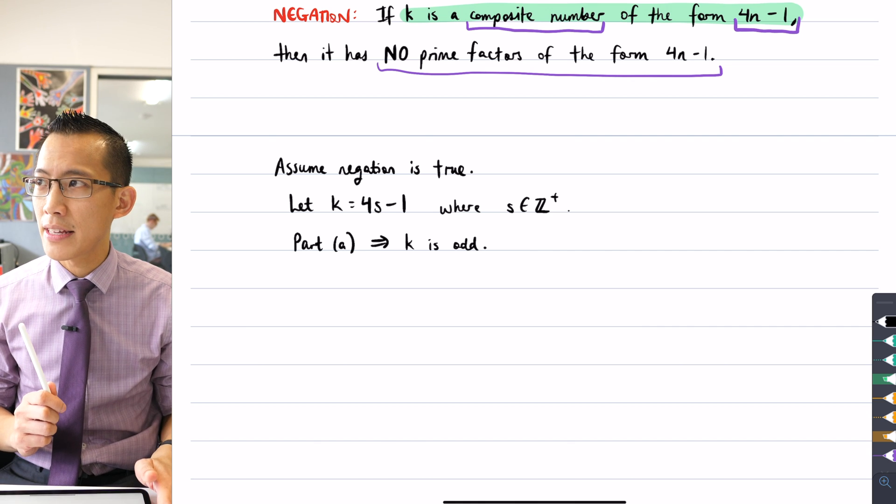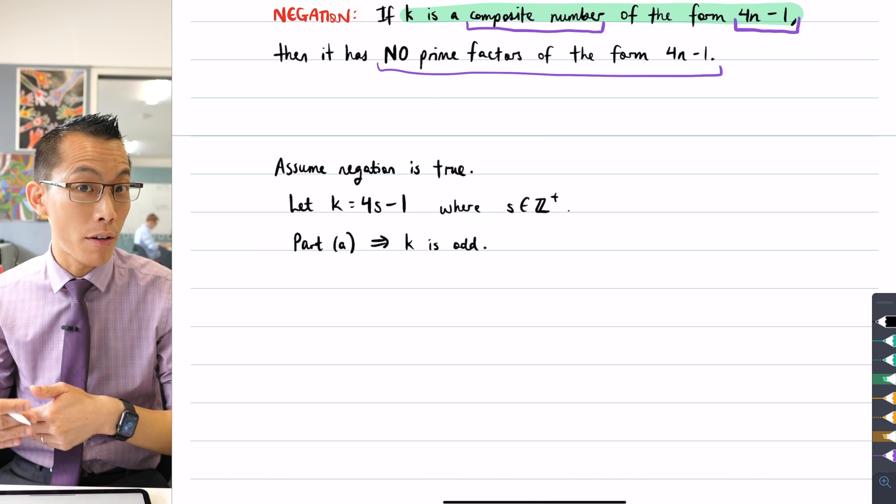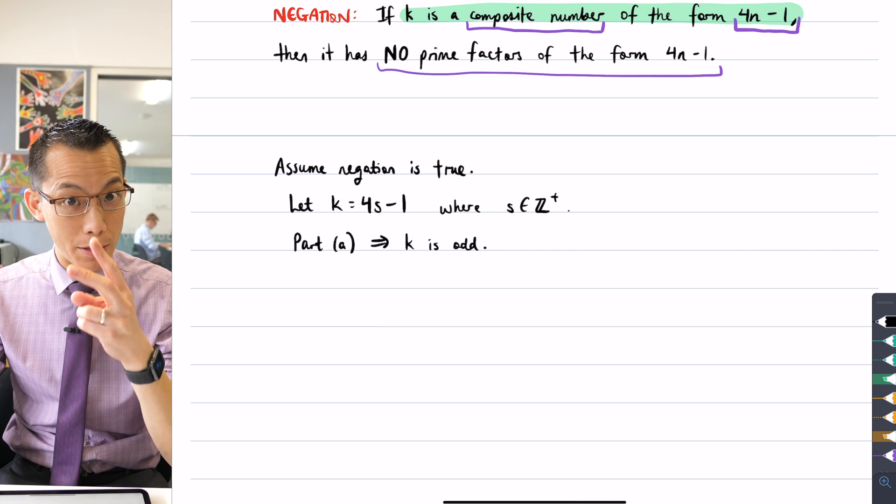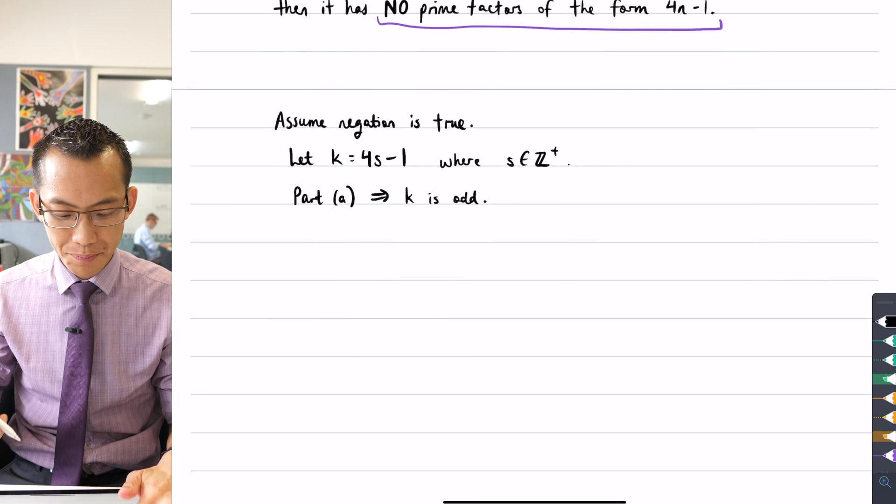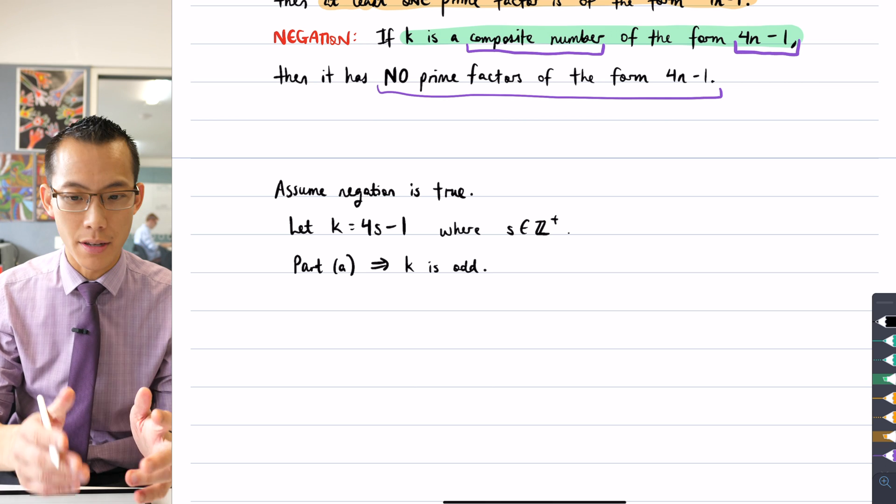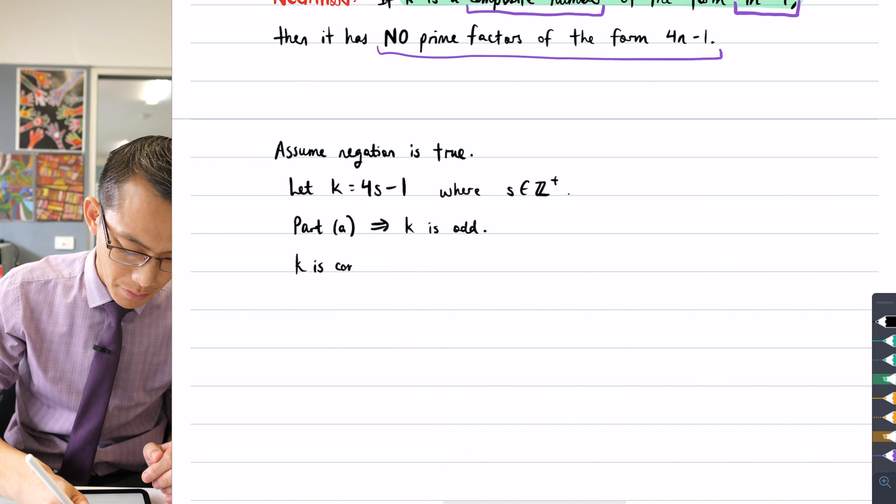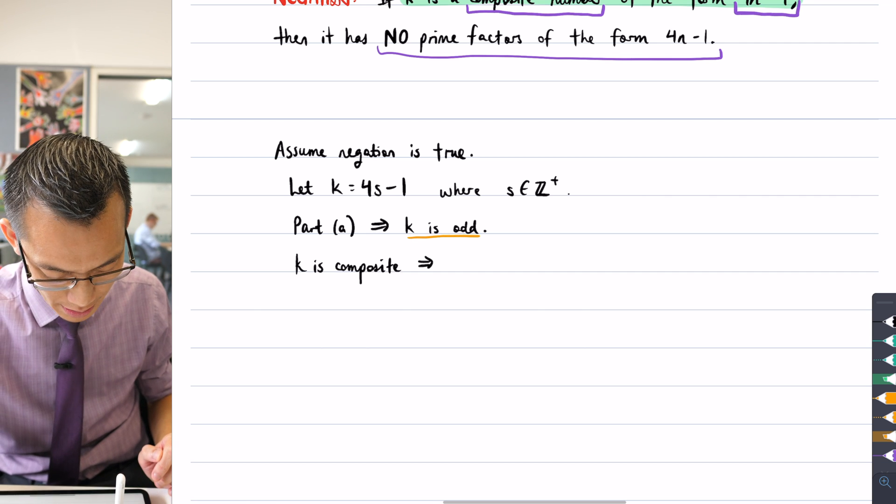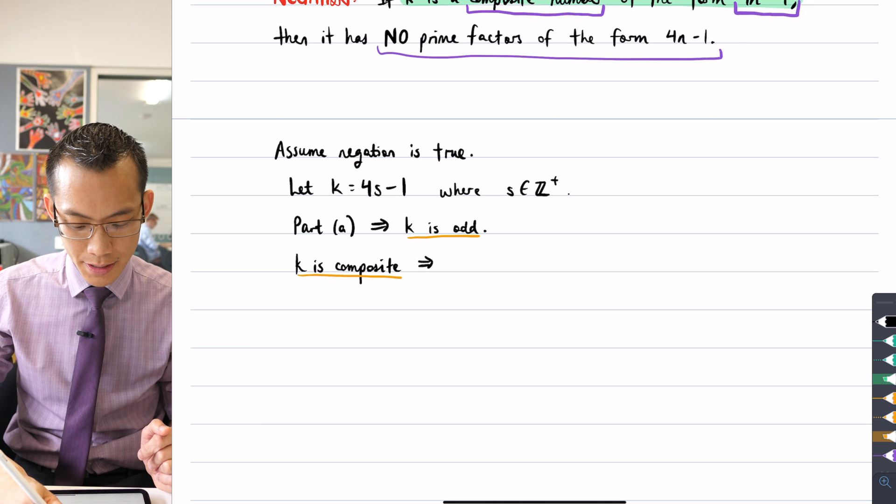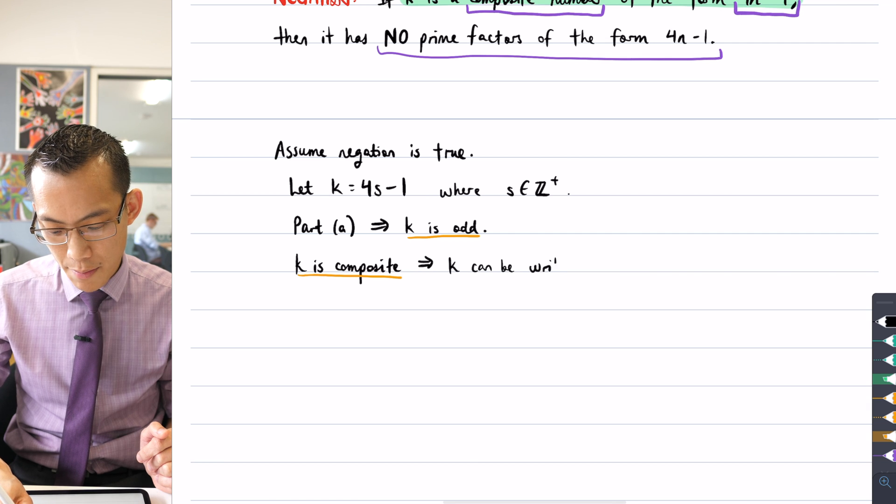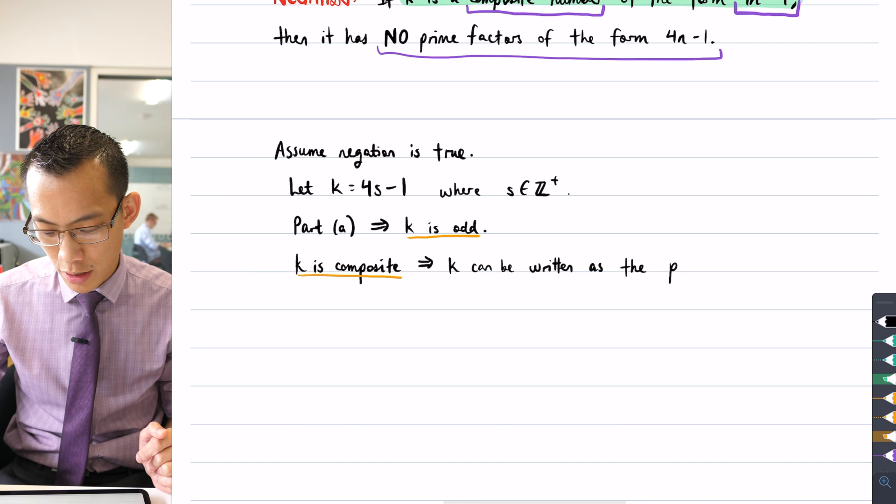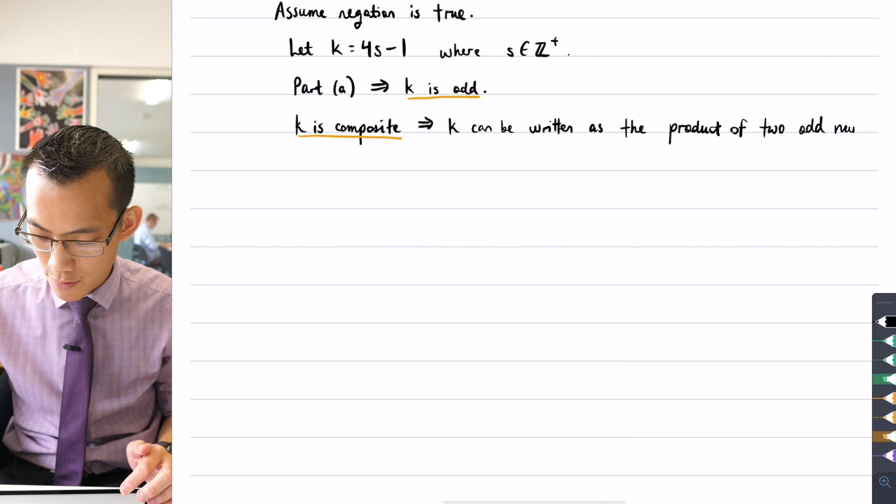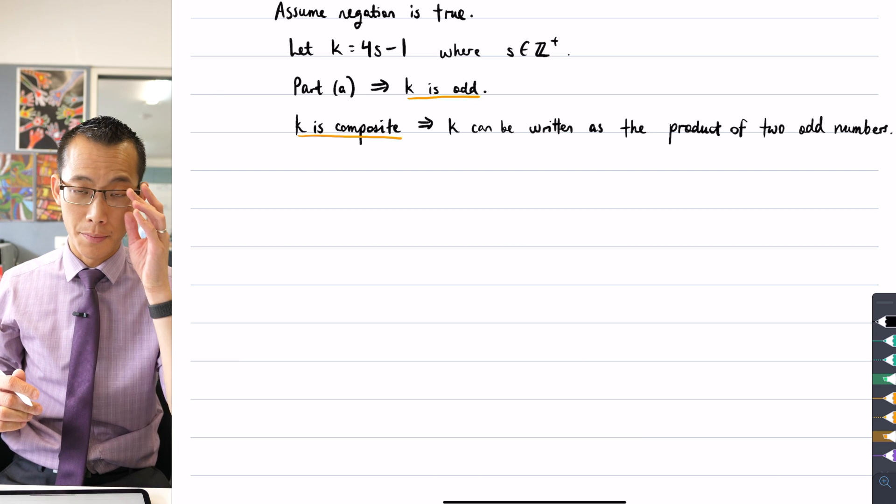Now you might think, what's the big deal with that? Well, if it's an odd number, then I can say not only is it odd, but it's composite, and there have to be only odd factors. As soon as you have a single even factor, then your resulting number, the product, is also going to be even because one of the factors will be 2.